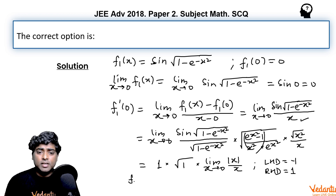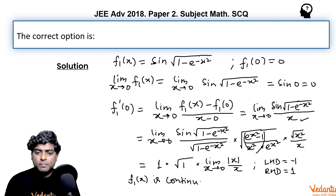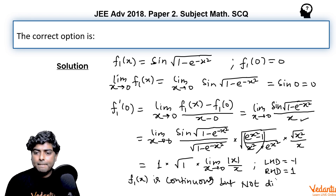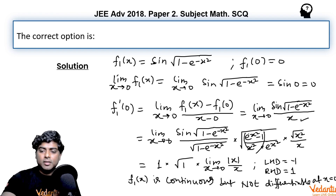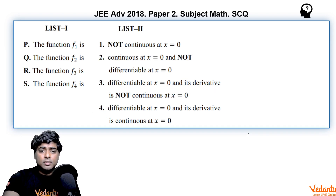Since LHD ≠ RHD, we conclude that f1 is continuous at x = 0 but not differentiable at x = 0. So f1 matches with property 2: continuous but not differentiable. Thus p goes with 2.